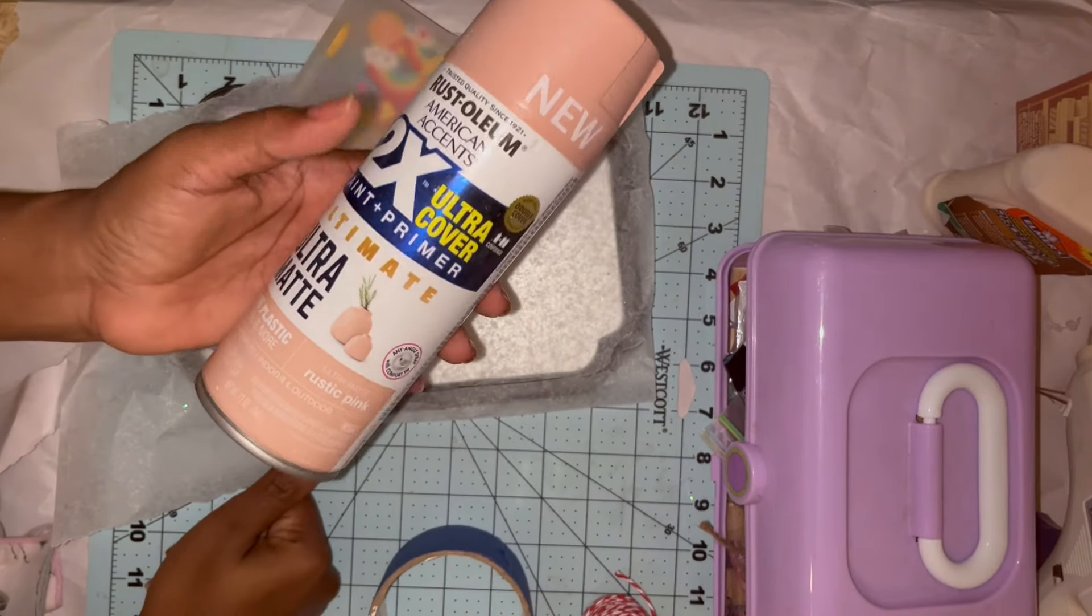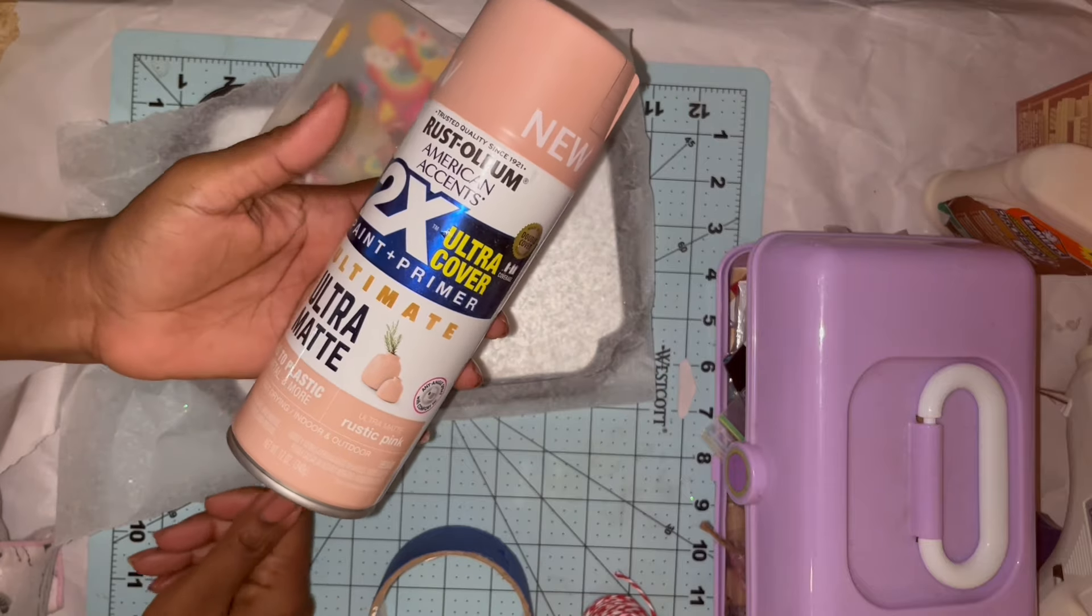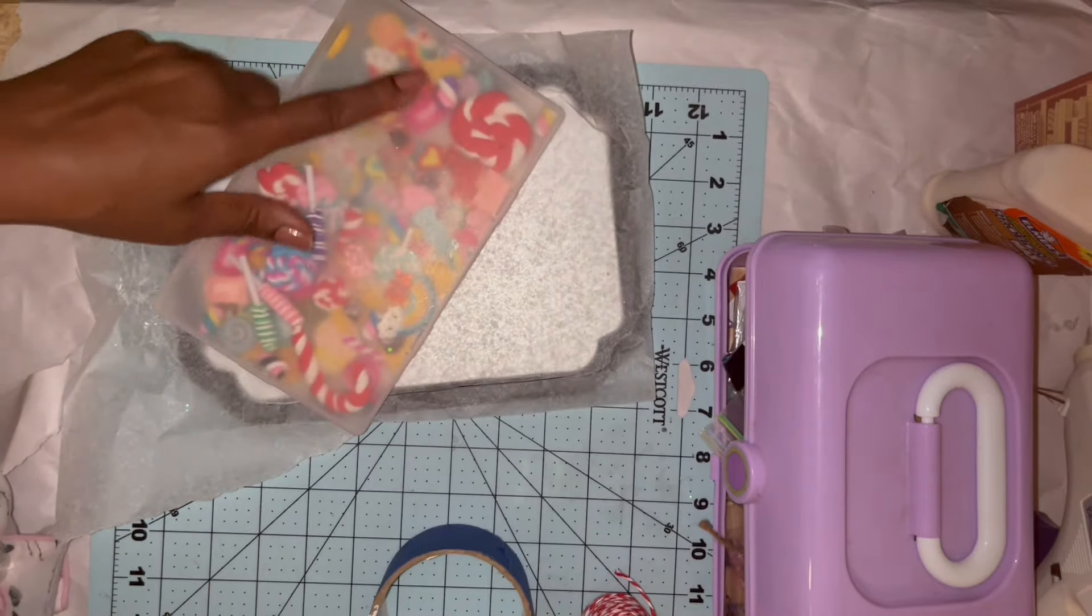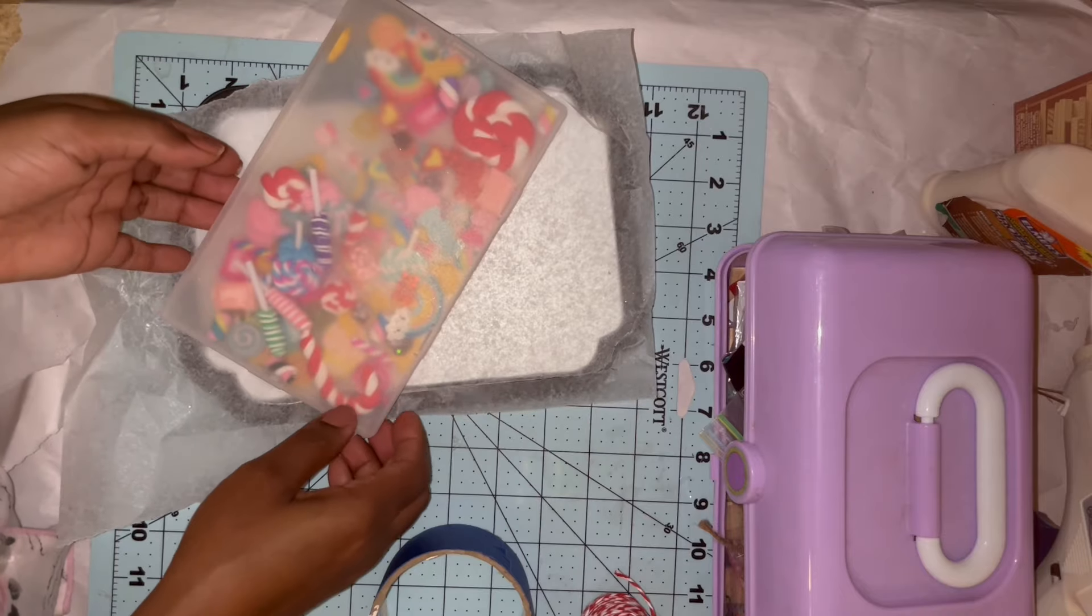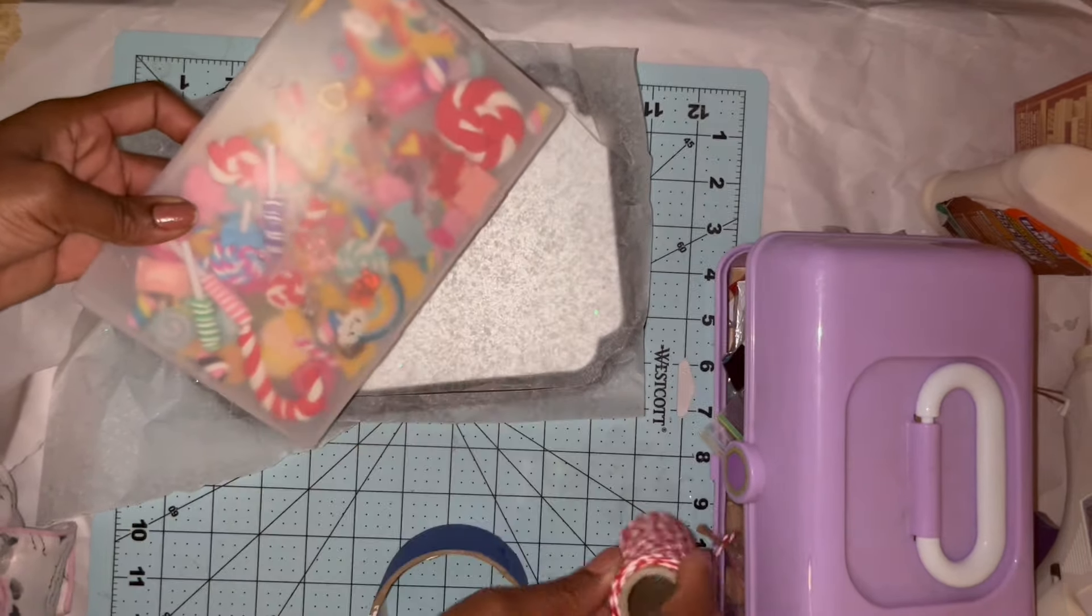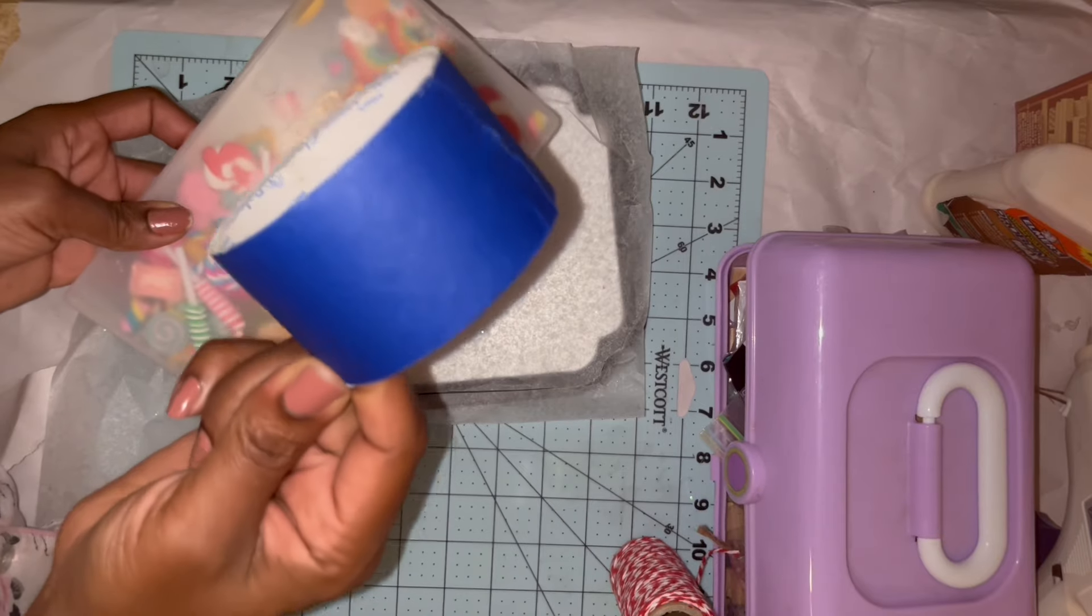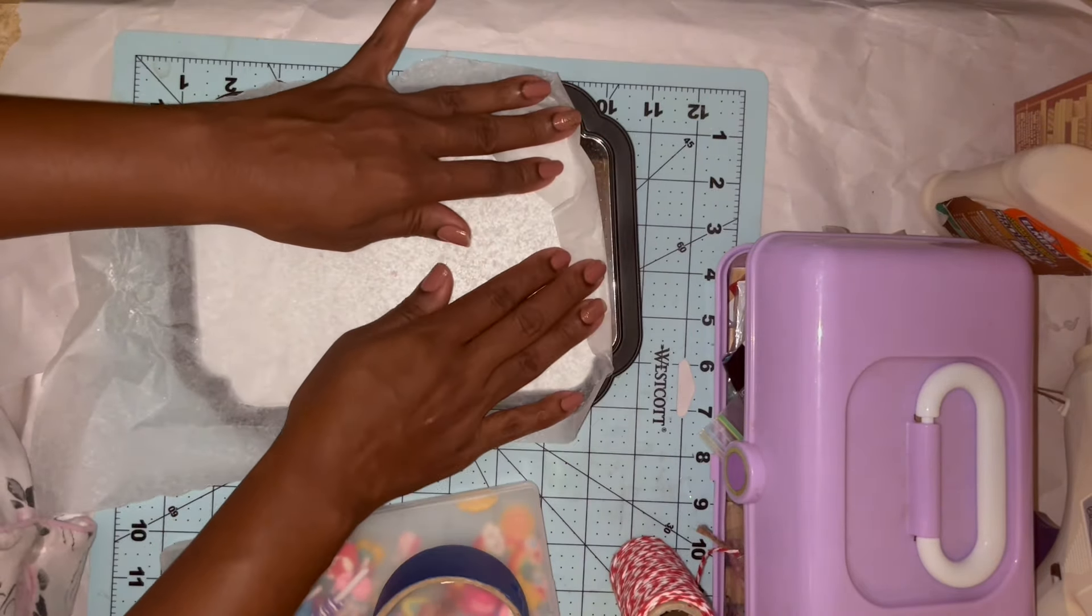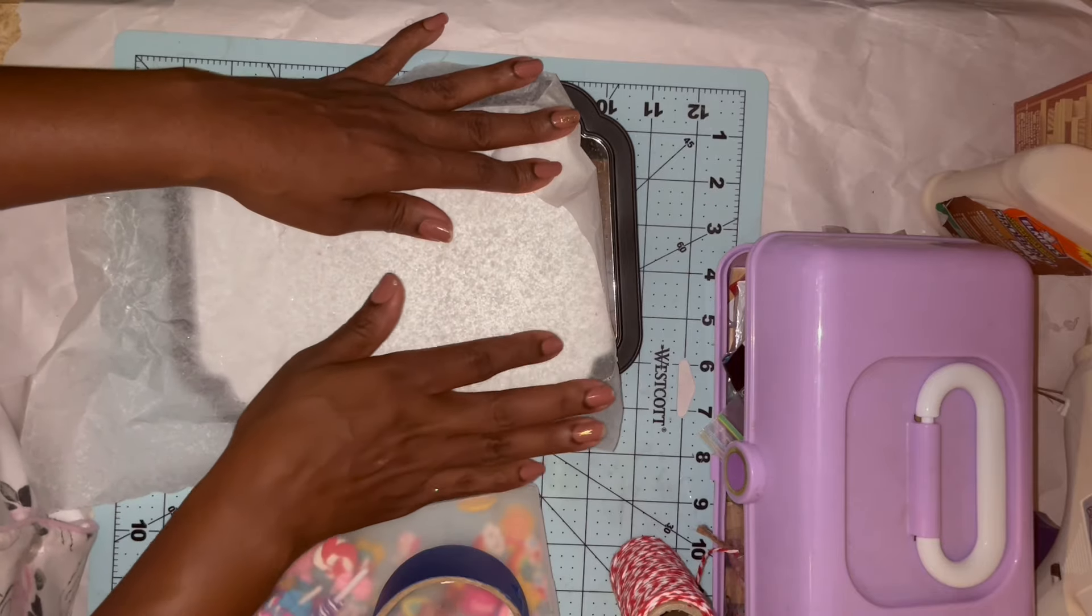Okay, so for this DIY I've got rustic pink matte Rust-Oleum paint that I'm going to use for this mirror. I have a container of faux sweets I found on Amazon, some candy cane twine, some painter's tape, and then I have a piece of wax paper covering the mirror so I don't have a bunch of glare up into the camera.